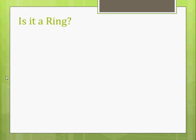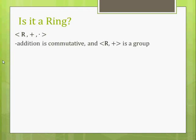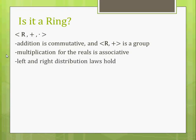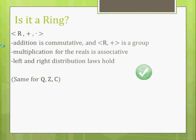Is it a ring? Are the real numbers under addition and multiplication like normal a ring? Well, addition is commutative, and the reals under addition is a group. Multiplication for the reals is associative and closed, obviously. And the left and right distribution laws — like two times (four plus six) equals two times four plus two times six. And the same goes for the rationals, integers, and complex numbers. So, it is a ring.